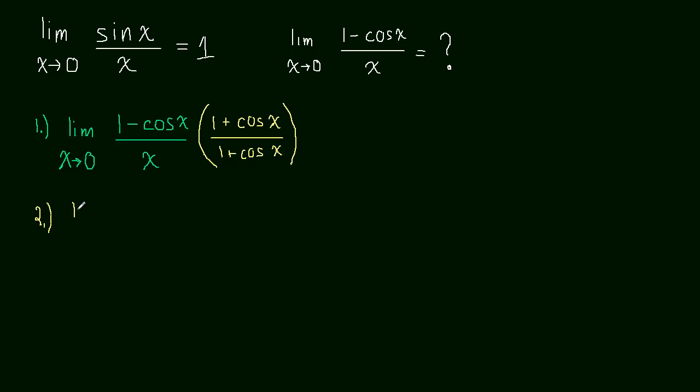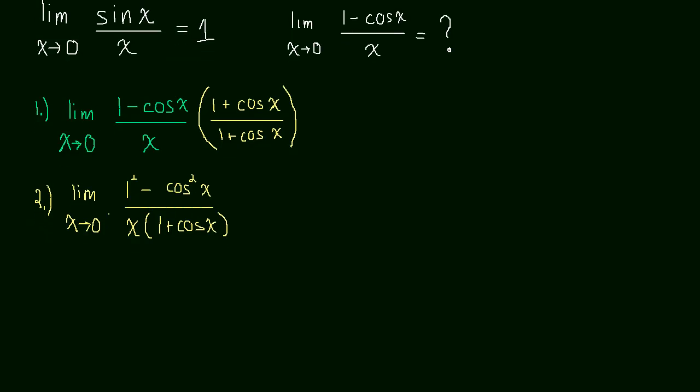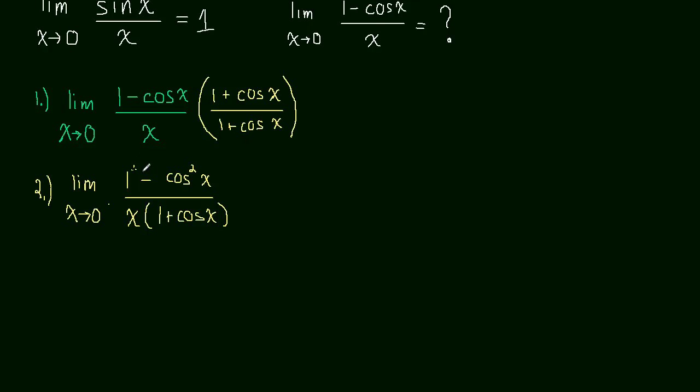So we're going to wind up with the limit as x approaches 0 of 1 squared minus cosine squared, and if you don't believe me that those two terms multiply to that, then just multiply it out for yourself. You'll find out what it comes out to, which is what I have written. And then this is over x times 1 plus cos x. So let's do some simplifying and rewriting. 1 squared is really just 1, right? So this is 1 minus cosine squared. Well, that's our trig identity. That's the whole reason we multiplied by this conjugate, so that we could get to this identity. So let's go ahead and use that. So this is the limit as x approaches 0 of sine squared x over x times 1 plus cos x.